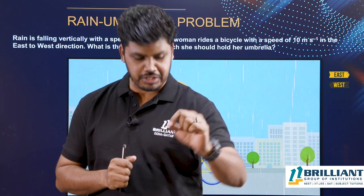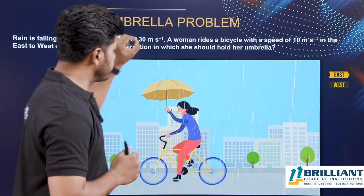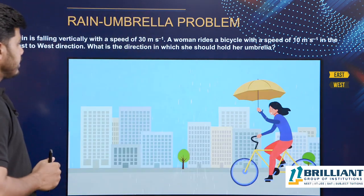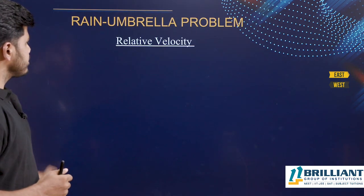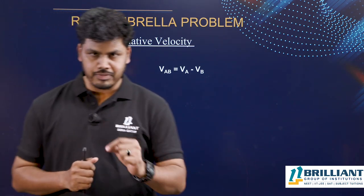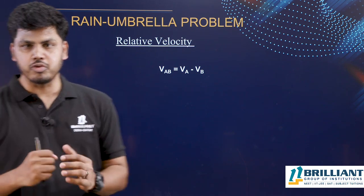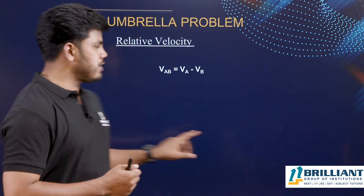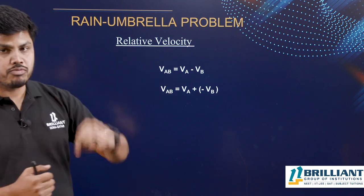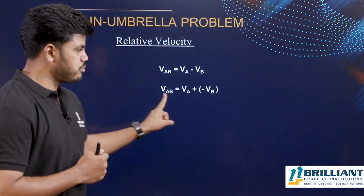Here we are going to consider the velocity of rain with respect to something else — that is relative velocity. We have to find the relative velocity of the rain with respect to the woman. We know relative velocity of two objects A and B: relative velocity of A with respect to B equals VA minus VB. Graphically, we take vectors VA and VB and instead of subtracting VB from VA, we add the negative of vector B to A, using the triangular law of vector addition.